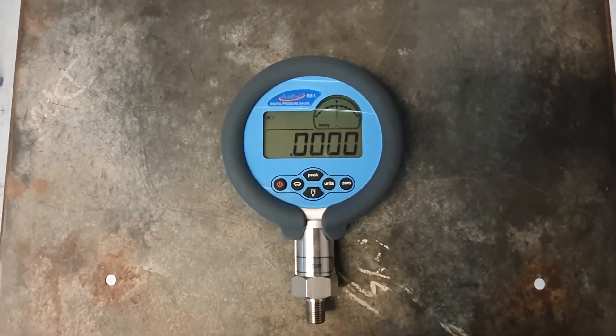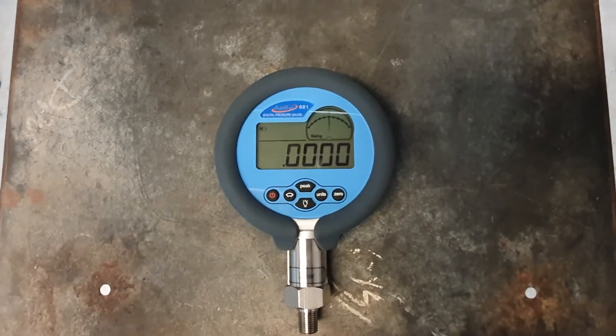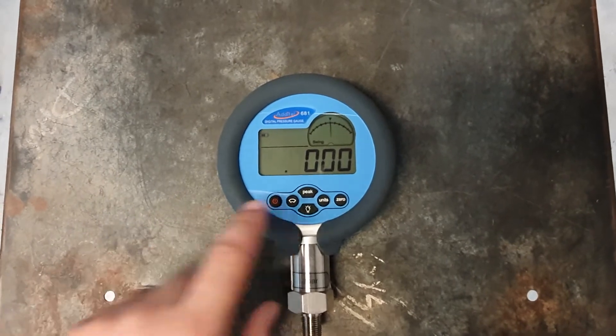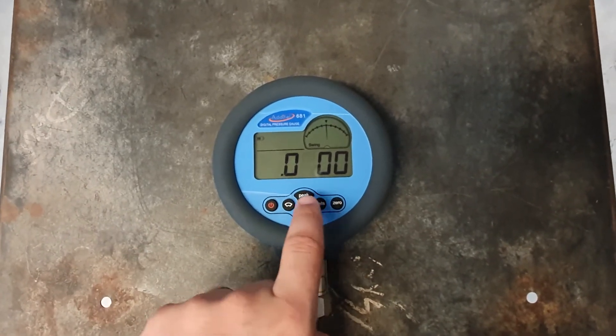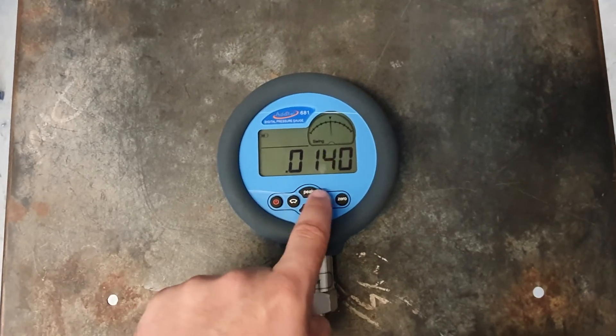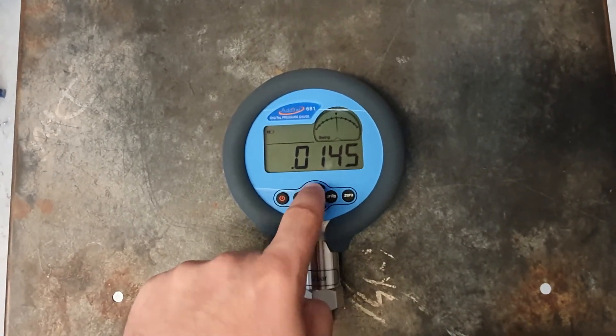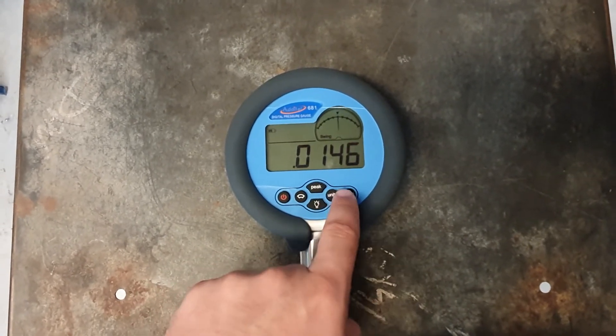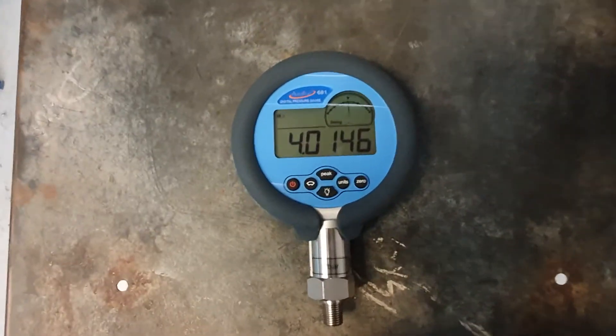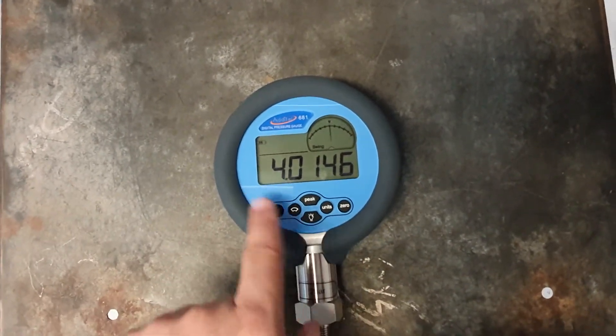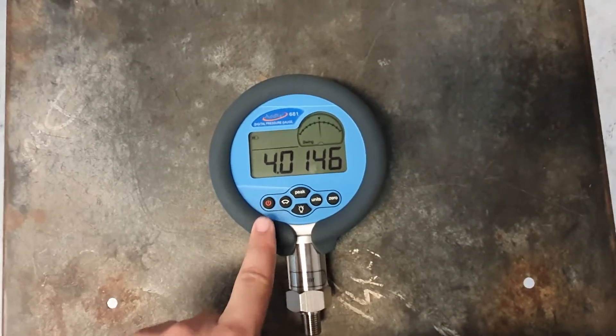And now we set the decimal points, so we want to set this to 0.0146. So 0146, so we're going to enter, and this is now showing the setting, what we've set.